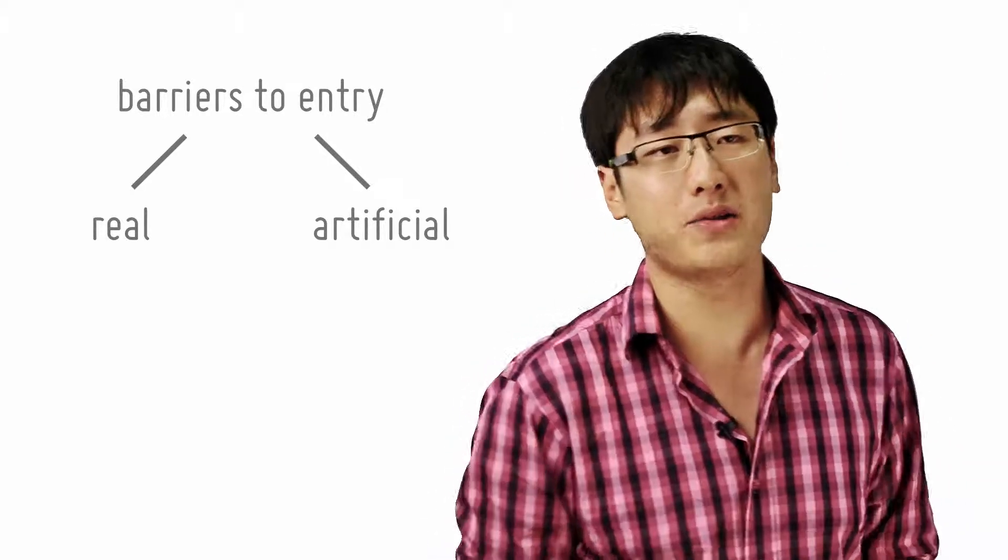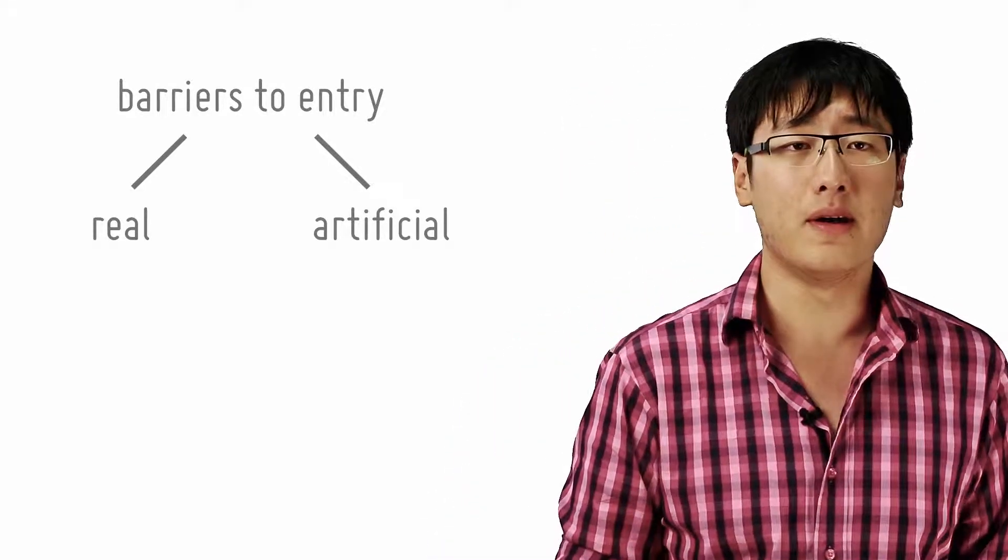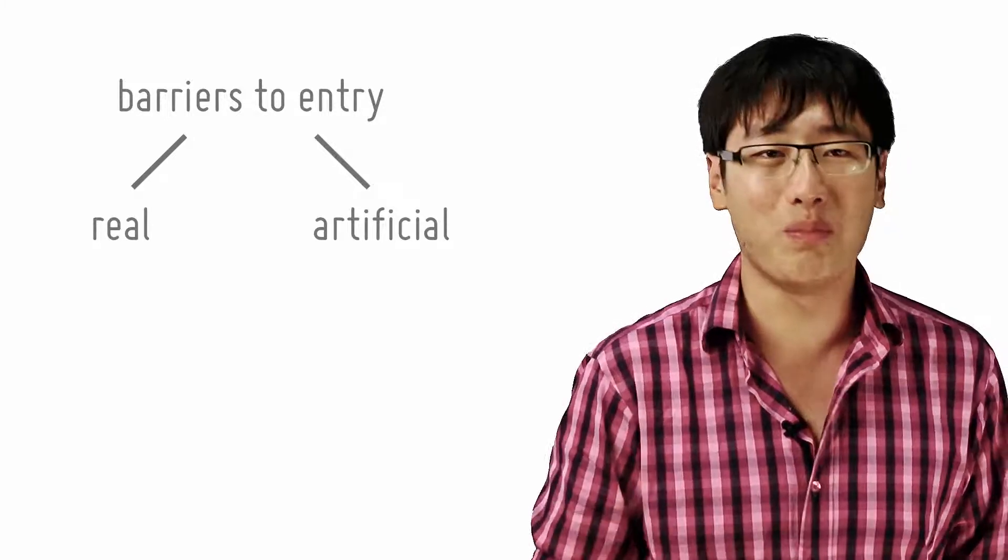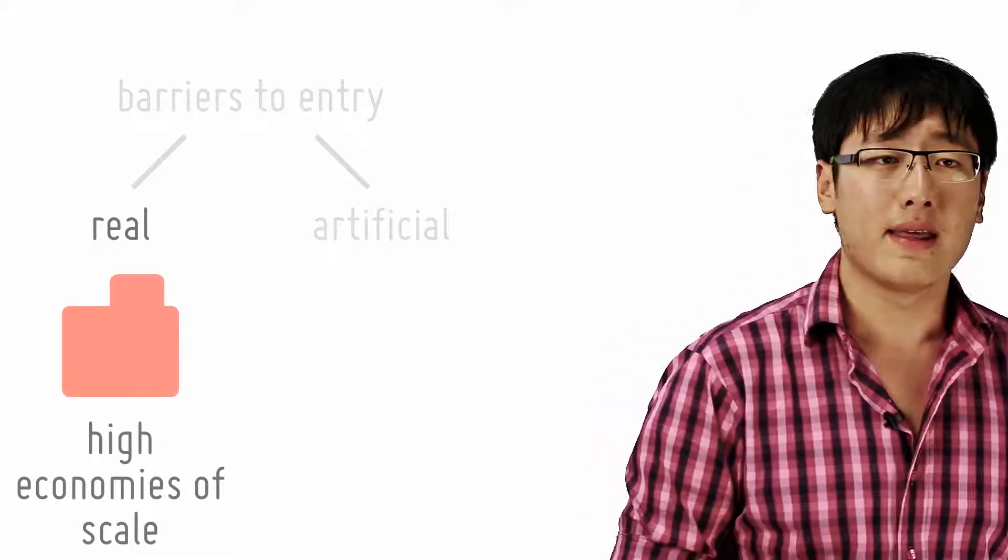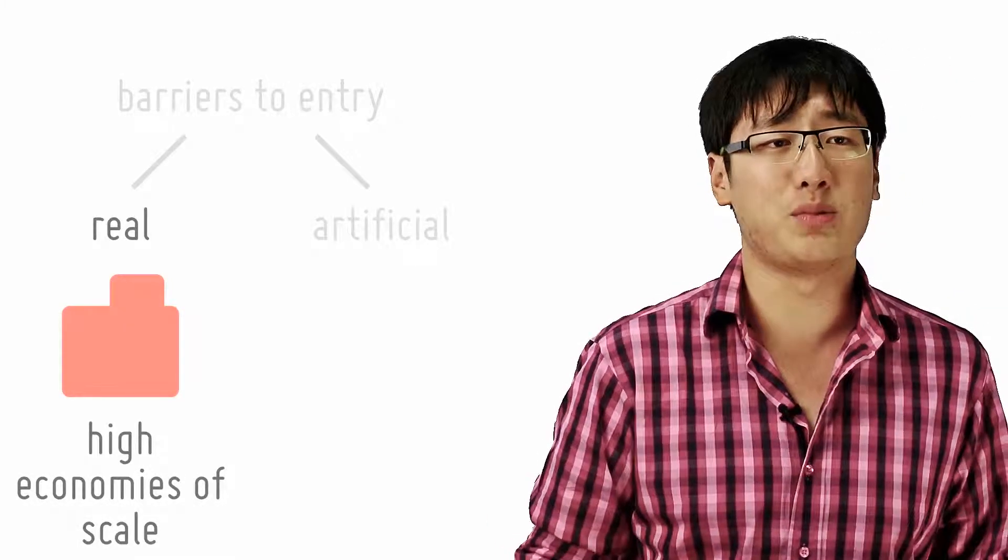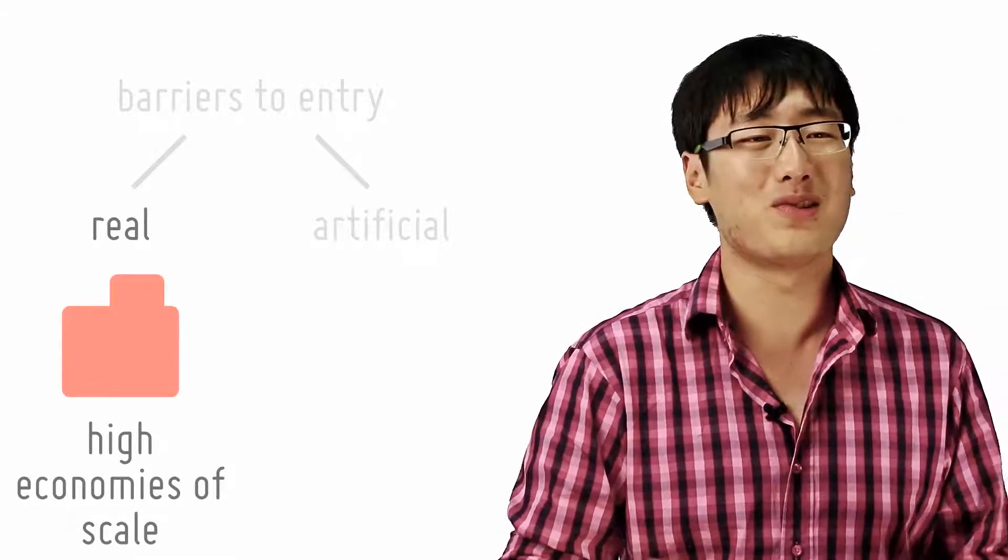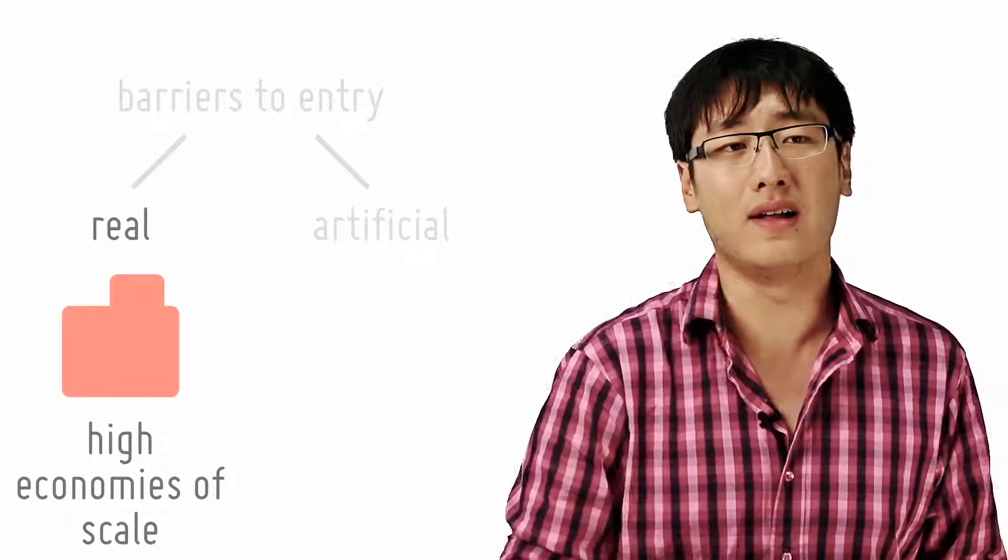Now of the real barriers to entry, there are certain types. For example, if you need to be the size of ExxonMobil to gain significant economies of scale in the petrochemicals industry, then not many people can attain that size without a significant amount, which is usually in the hundreds of billions of dollars of capital.